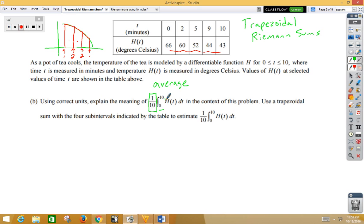We want to use a trapezoidal sum with four subintervals, so n is 4, indicated by the table to estimate the one tenth. Don't forget to make use of the one tenth. It is from 0 to 10. Notice we skip by 2, we skip by 3, we skip by 4, and we skip by 1. We need to use the formula for the area of a trapezoid. Area is 1/2 base 1 plus base 2 times height.